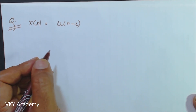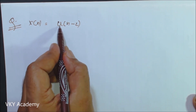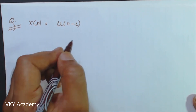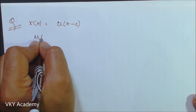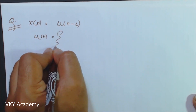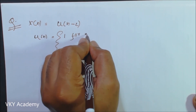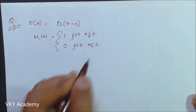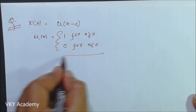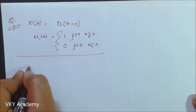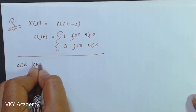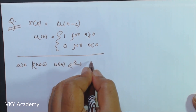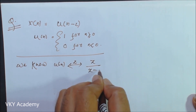Now, u always refers to the step function — the unit step function. The basic unit step function u of n is equal to 1 for n greater than or equal to 0, and is equal to 0 for n less than 0. We know the Z transform of u of n is z divided by z minus 1.